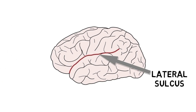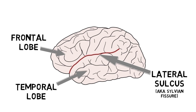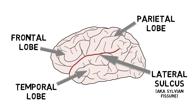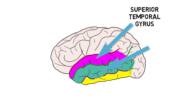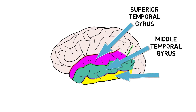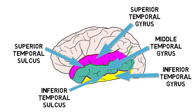The lateral sulcus, also known as the sylvian fissure, forms a boundary between the temporal lobe, the frontal lobe, and part of the parietal lobe. The lateral surface of the temporal lobe is made up of the superior, middle, and inferior temporal gyri, which are separated from one another by the superior and inferior temporal sulci.